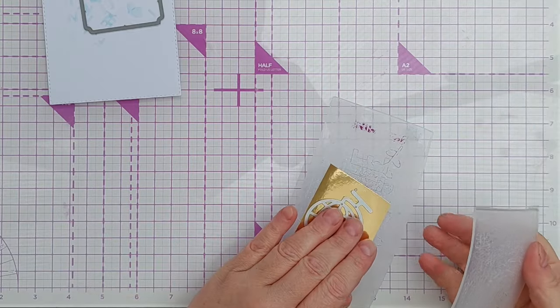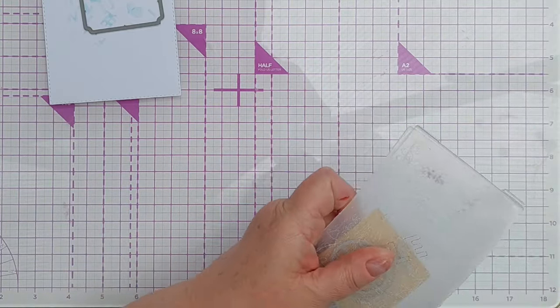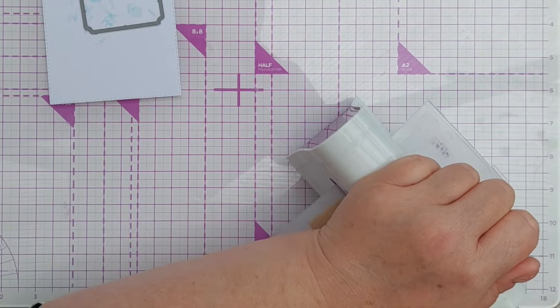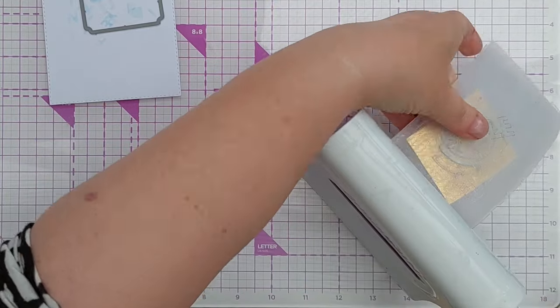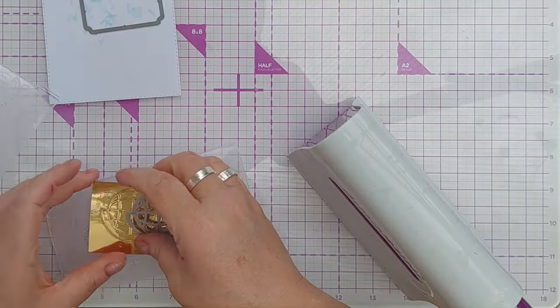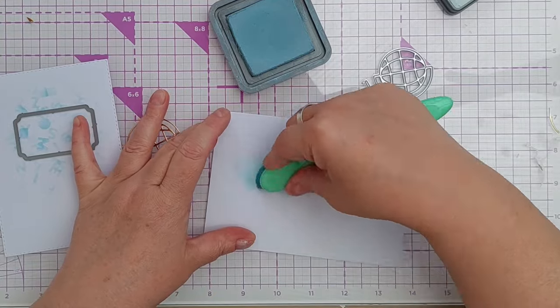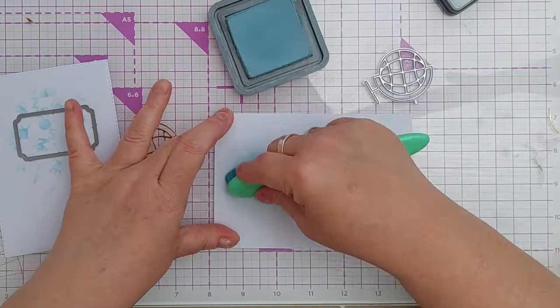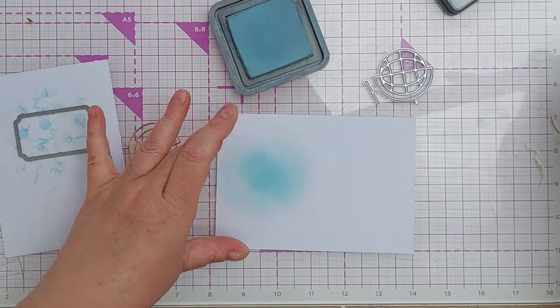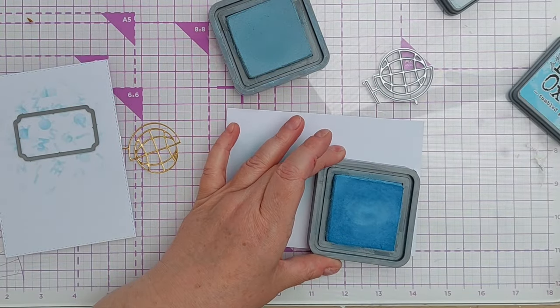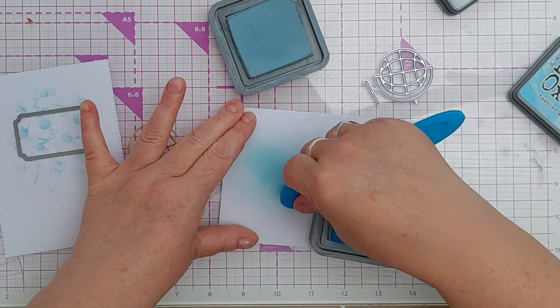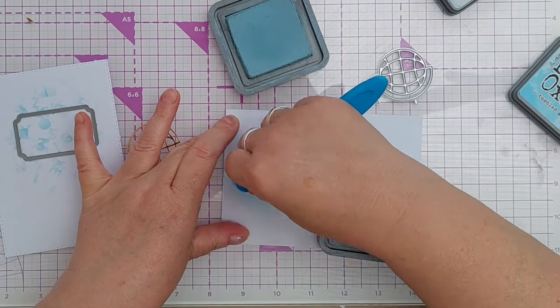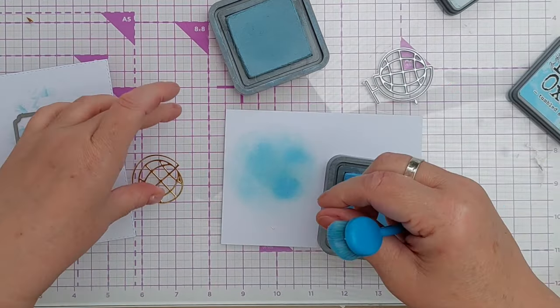For my focal point, I decided to use a world globe die and I cut that from gold foiled cardstock. I then took the Speckled Egg, which is a bluey-green, and the Tumbled Glass, which is blue, and blended them onto a little bit of cardstock because I wanted to create some bluey-greeny bits to inlay into my globe so it looks like a globe - the planet Earth, the blue-green planet that we live on.